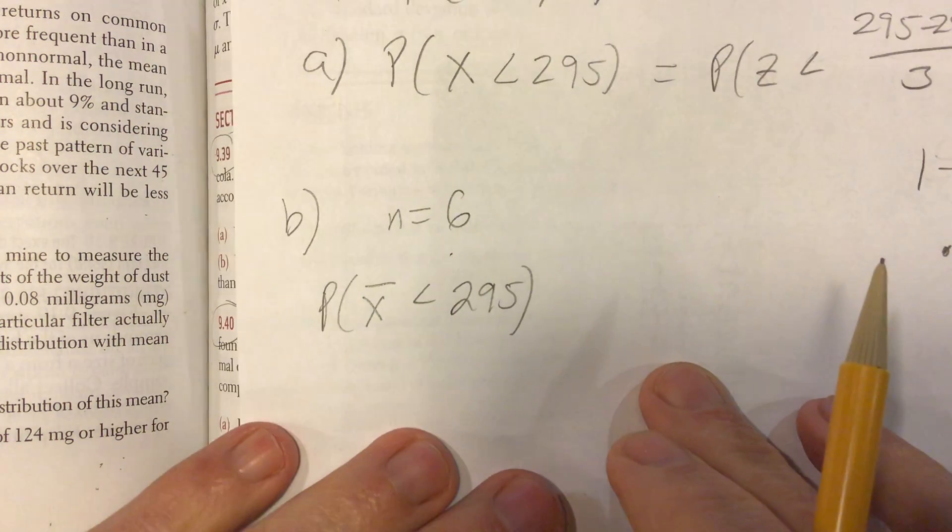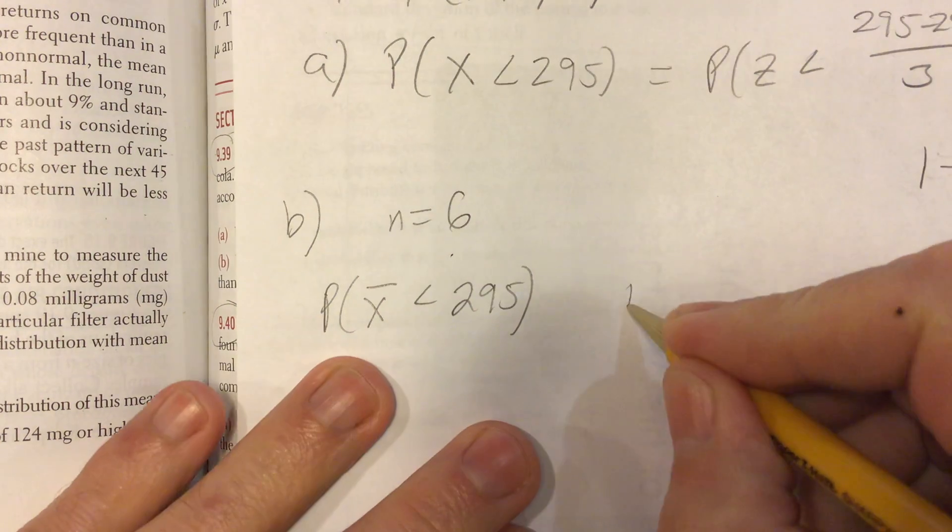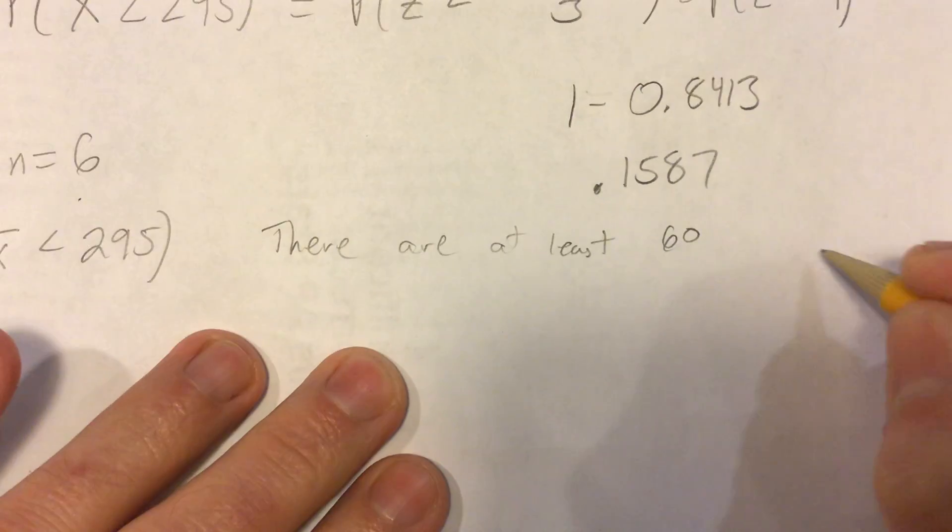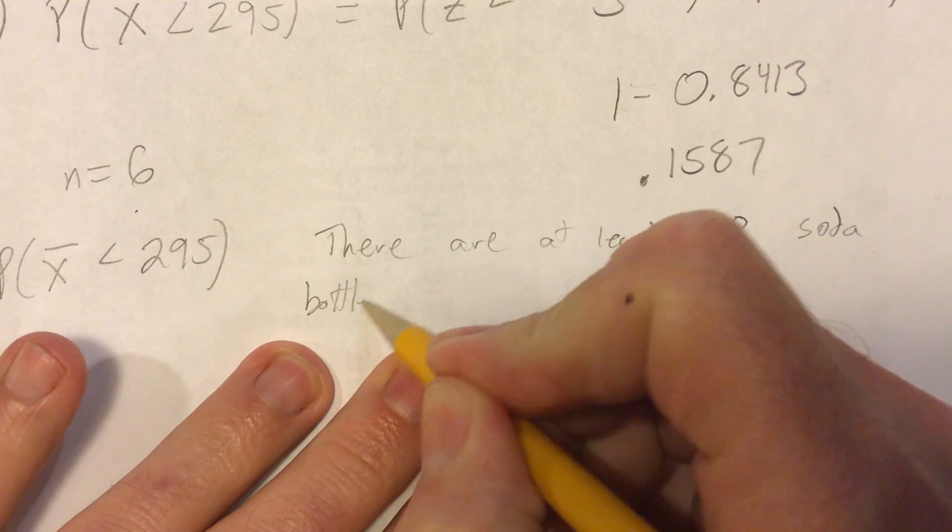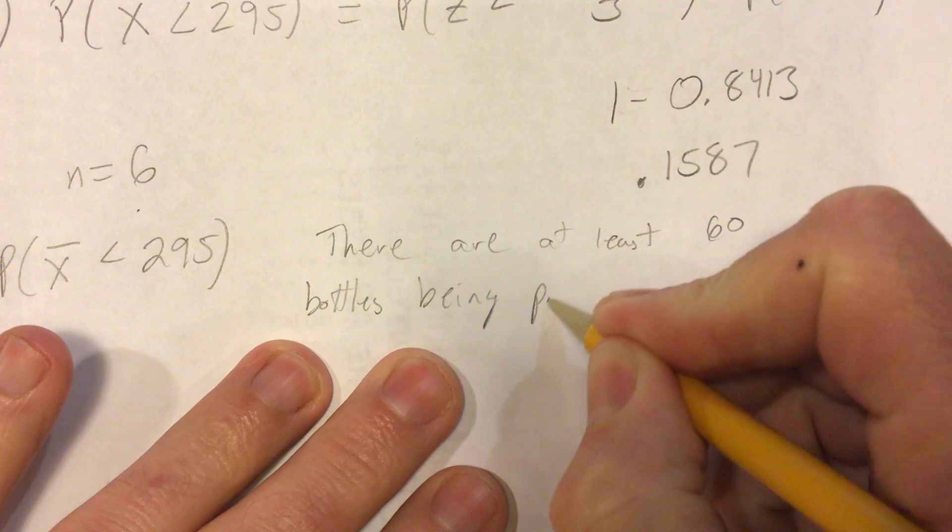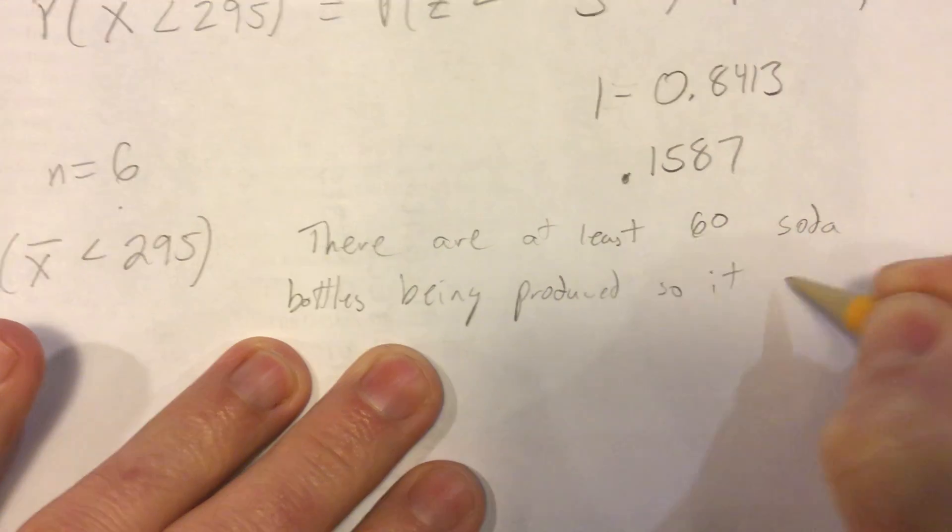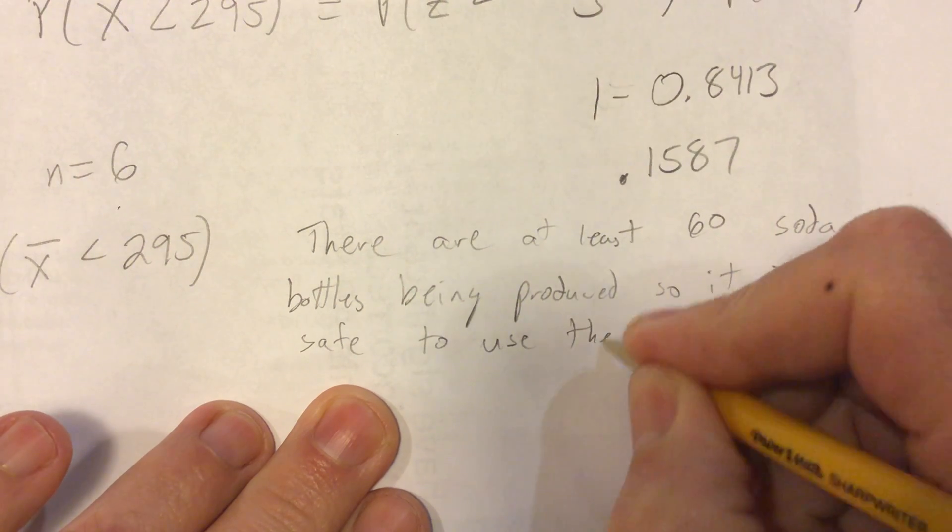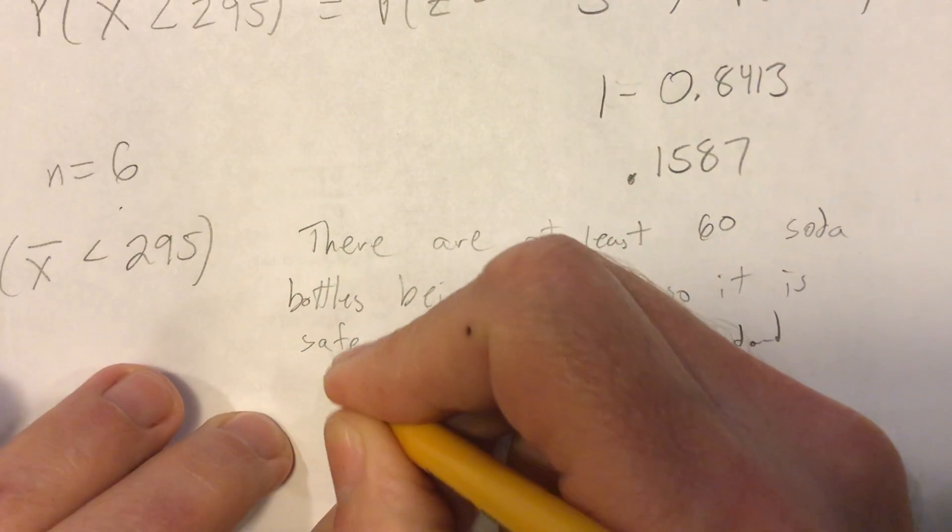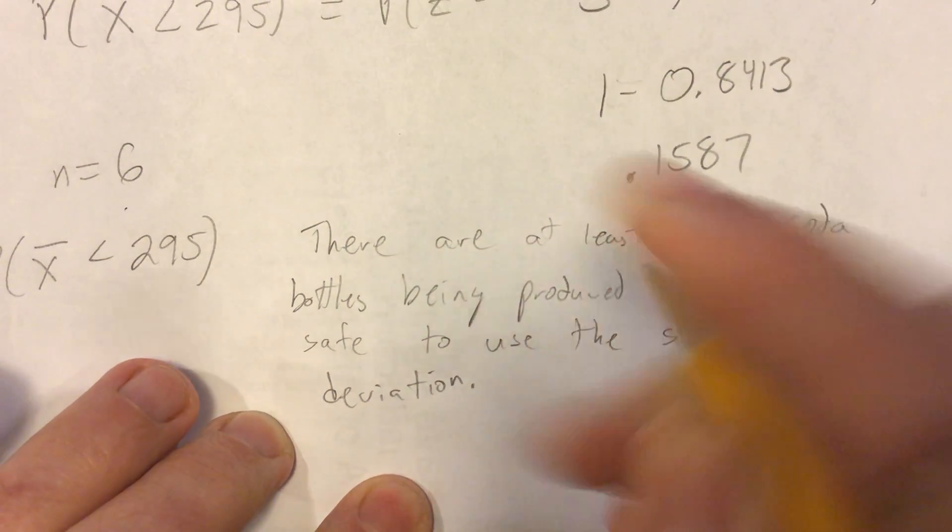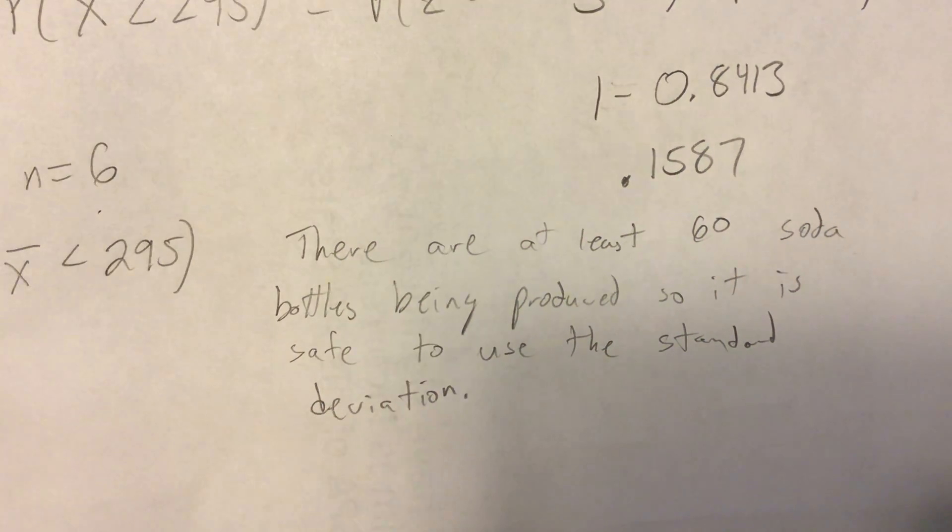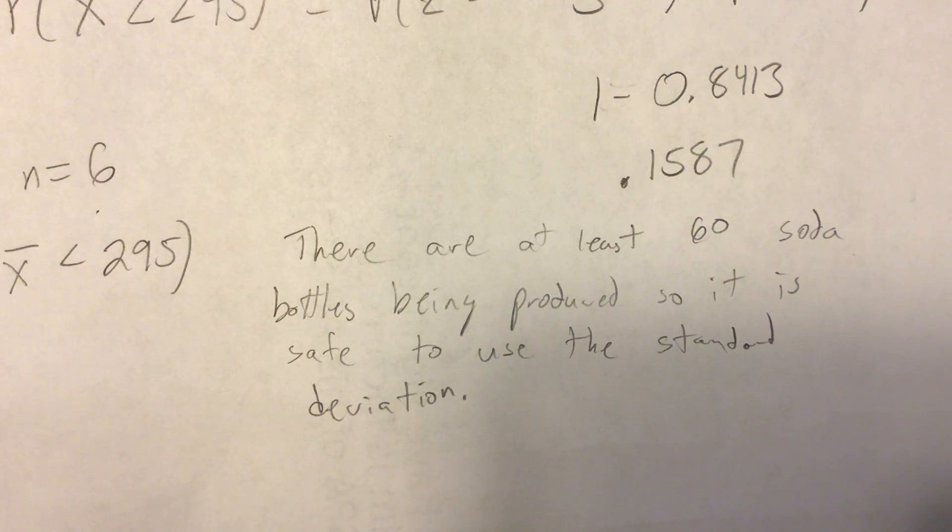Since we are talking about 6, we do need to make sure we can use our standard deviation formula. There are at least 60 soda bottles being produced, so it is safe to use the standard deviation formula. I keep writing this out over and over again, and it makes these videos really long. But that's because I've taught this enough to know that's what students don't do because they're lazy, and then they lose points. So don't be lazy. Write it out.